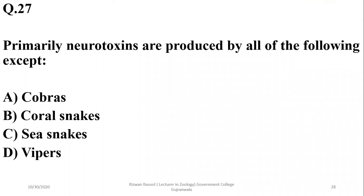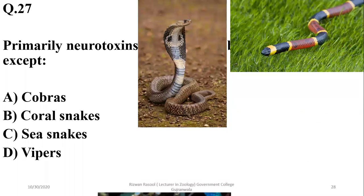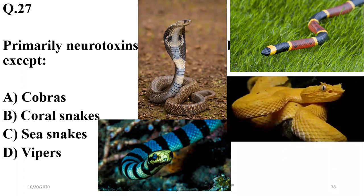Question twenty-six: neurotoxins are primarily produced by all of the following except vipers. Cobras, coral snakes, and sea snakes produce neurotoxins, but the poisons of vipers are primarily hemotoxins. The correct option is delta.